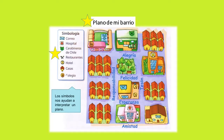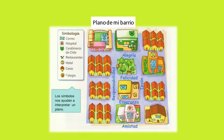Ahí está la simbología de este plano. ¿La ves? ¿Para qué es la simbología? La simbología nos muestra el significado de los dibujos o de los símbolos que aparecen en el plano. Observa el cuadro de la simbología: correo, con una carta; hospital, con el símbolo de una cruz roja; Carabineros de Chile, con el escudo; luego dice restaurante, representado con el símbolo de una cuchara y un tenedor cruzado.